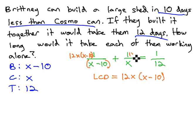Multiplying each term by 12x times x minus 10, and then simplifying, we see the x minus 10's divide out, leaving 12x plus,